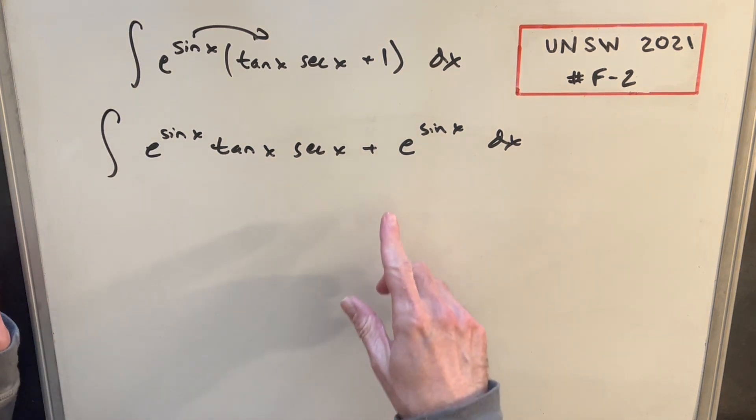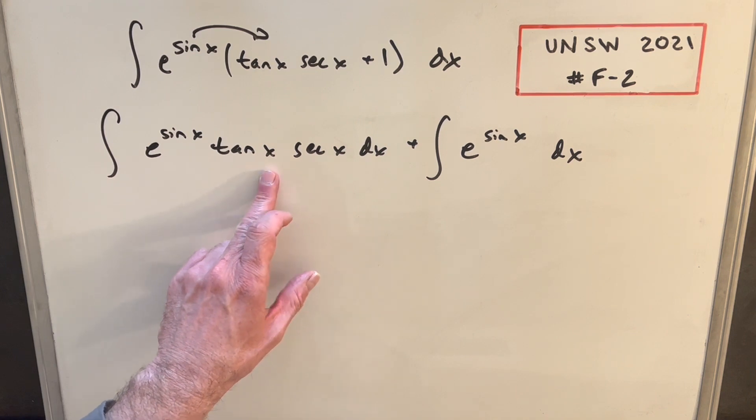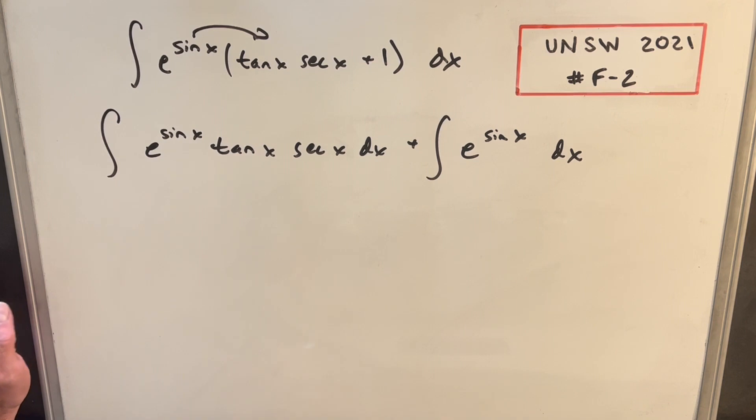But first what I'm going to do is just split this into two integrals. And let's see what we have. Okay, so I'm going to focus on one of these integrals. And I'm actually going to focus on the first one for integration by parts just because I noticed that secant times tan, we actually know the integral of this. The integral of just this piece here is going to be secant.